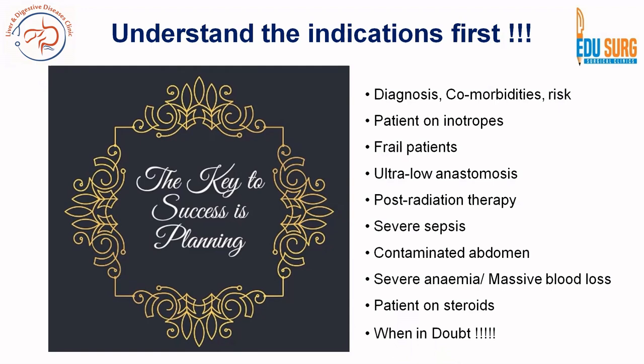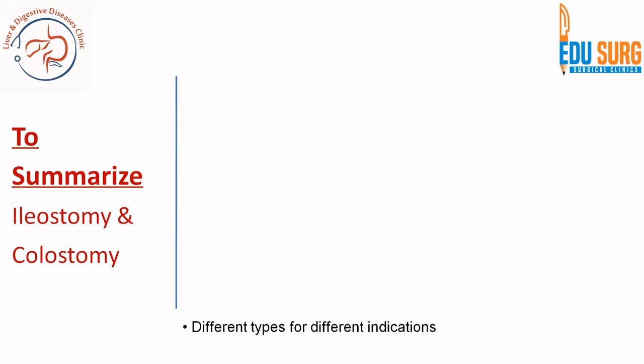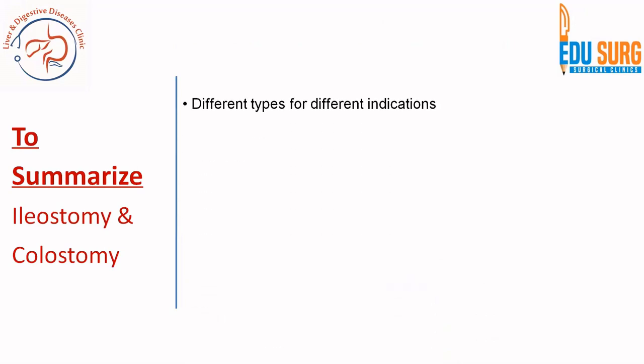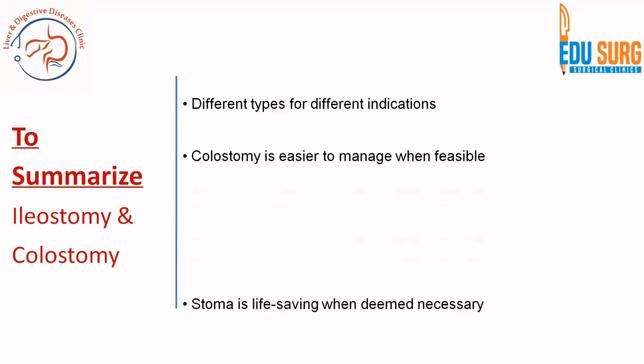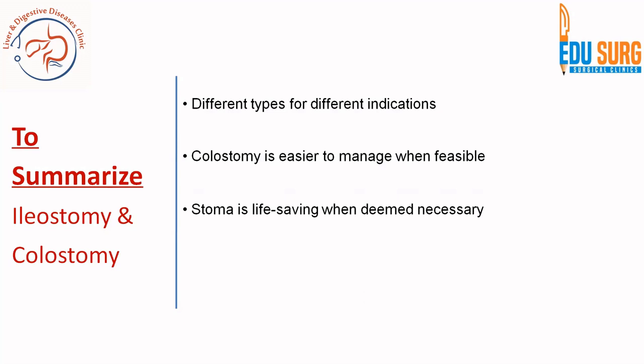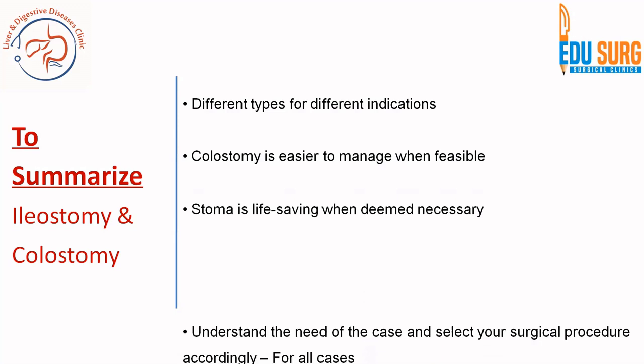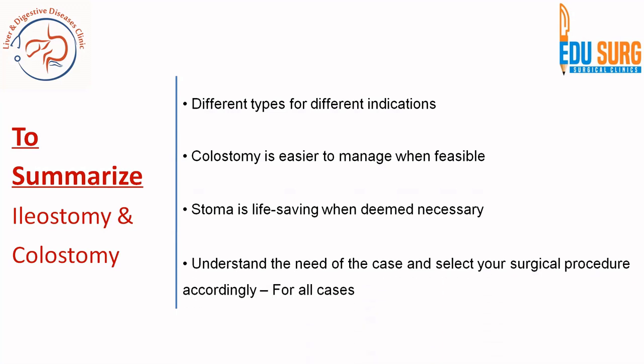Whenever in doubt, remember that a stoma can be life-saving and will never harm the patient if done properly. To summarize: different types of stomas exist for different indications. Colostomy is easier to manage when feasible because the output is not as high and not as liquid as in ileostomy or jejunostomy. A stoma is life-saving when necessary or when in doubt given the conditions we discussed. Understand the need of the case, select your surgical procedure, and plan your stoma accordingly.